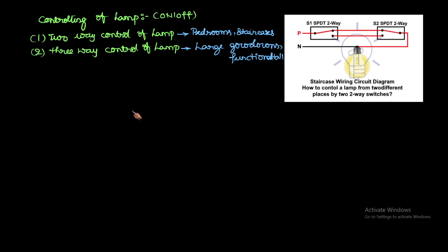Two-way control means you are controlling your lamp on/off from two positions or two points. Three-way control means you are controlling your lamp on/off from three points. First we will understand what is the meaning of two-way control of the lamp.